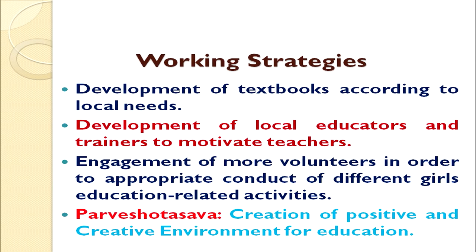The working strategies adopted in Lok Jumbesh project included the development of textbooks according to local needs — textbooks were developed by the state of Rajasthan keeping into consideration local needs of the people. The second working strategy was the development of local educators and trainers to motivate teachers to perform their roles effectively. Local people, local educators, and local trainers were involved to encourage teachers to perform their role satisfactorily and achieve the target of universal primary education.